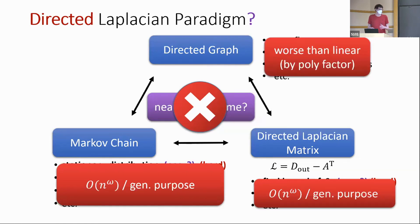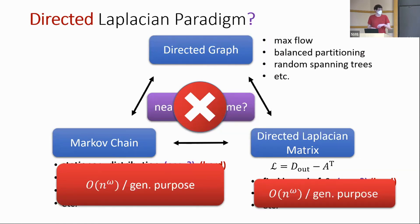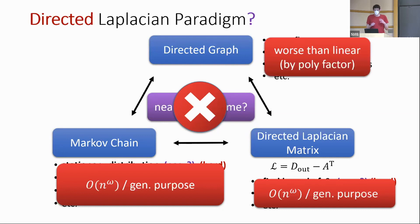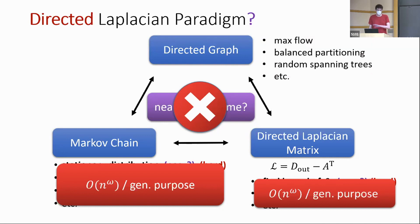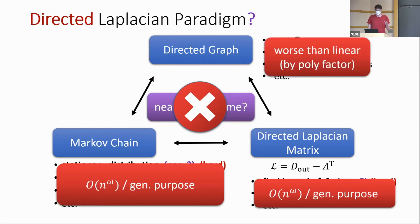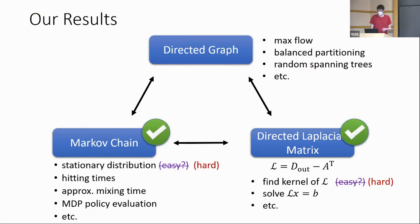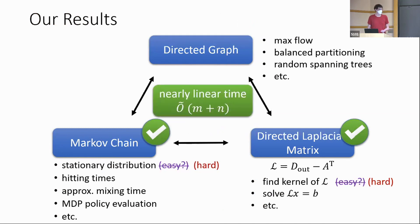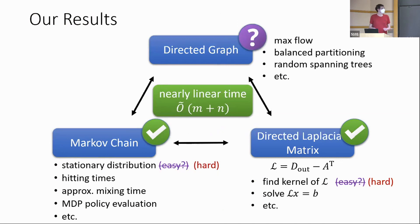Furthermore, in the combinatorial algorithm setting, all of the known algorithms for these problems were worse than linear by a polynomial factor. What we show is that for two of these three things, you can get nearly linear time in the number of edges and vertices. An interesting open question is whether you can use this to also solve some of these combinatorial problems faster.